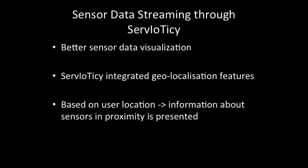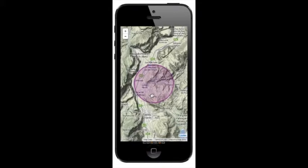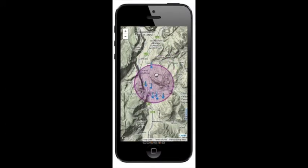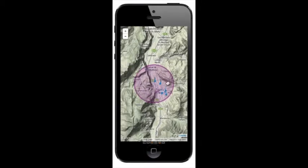Storing and processing sensor information in Servioticy provides us with better data visualization. We are using the integrated geolocalization features to present information about sensors in the proximity of users. This is a demo visualizing weather and slope data in the area of Torrentino. When we click in a particular area, we make a geolocation query on the backend, and we receive the list of sensors around that area.